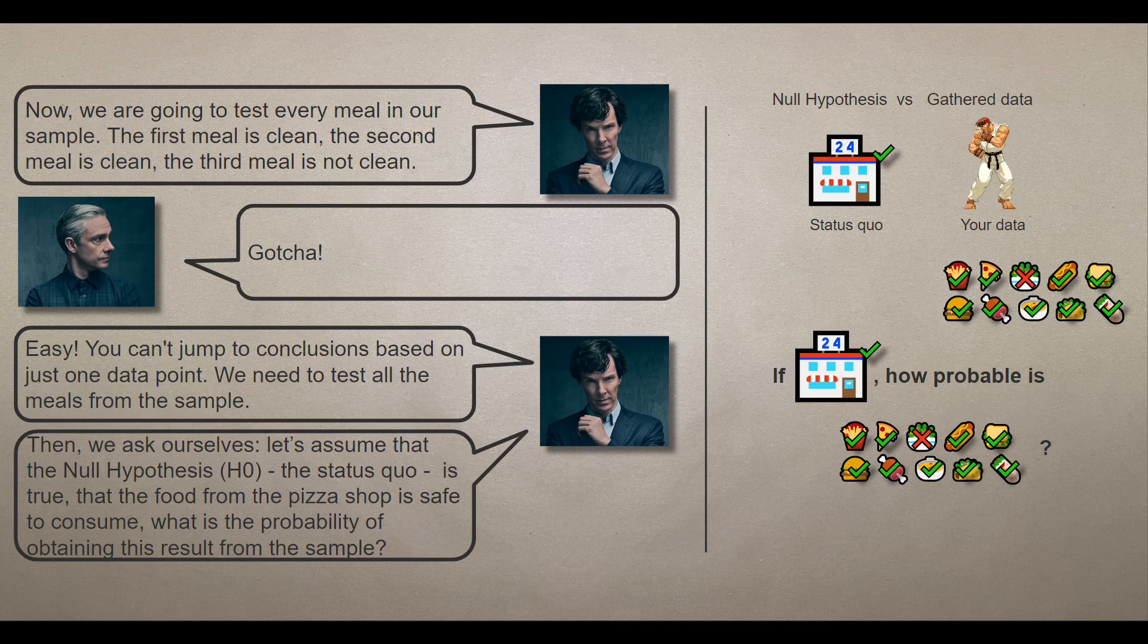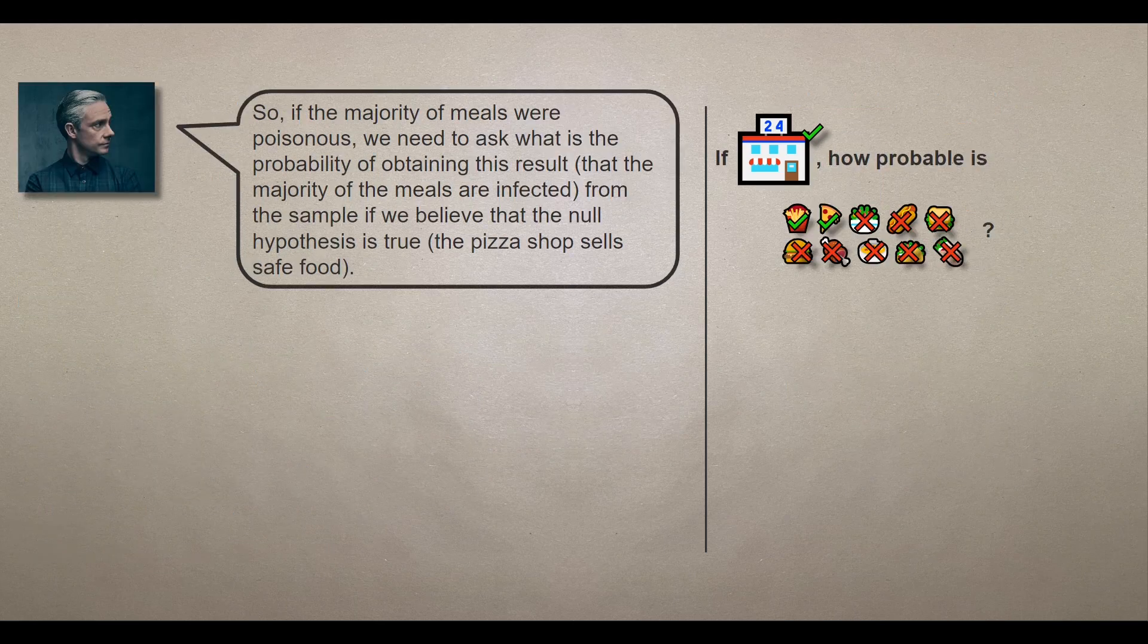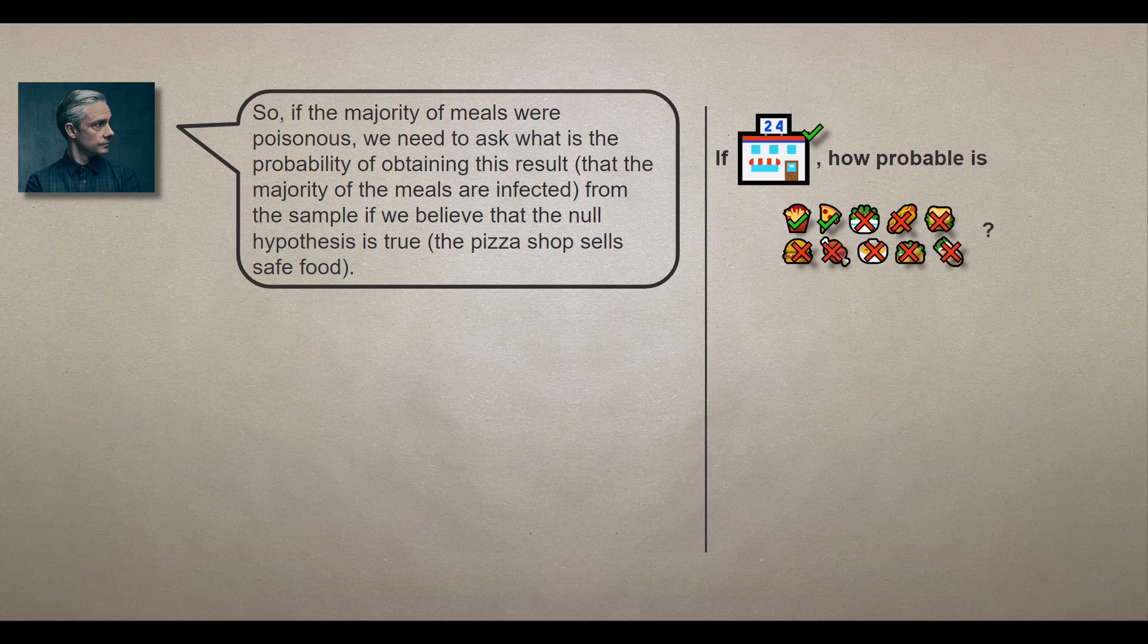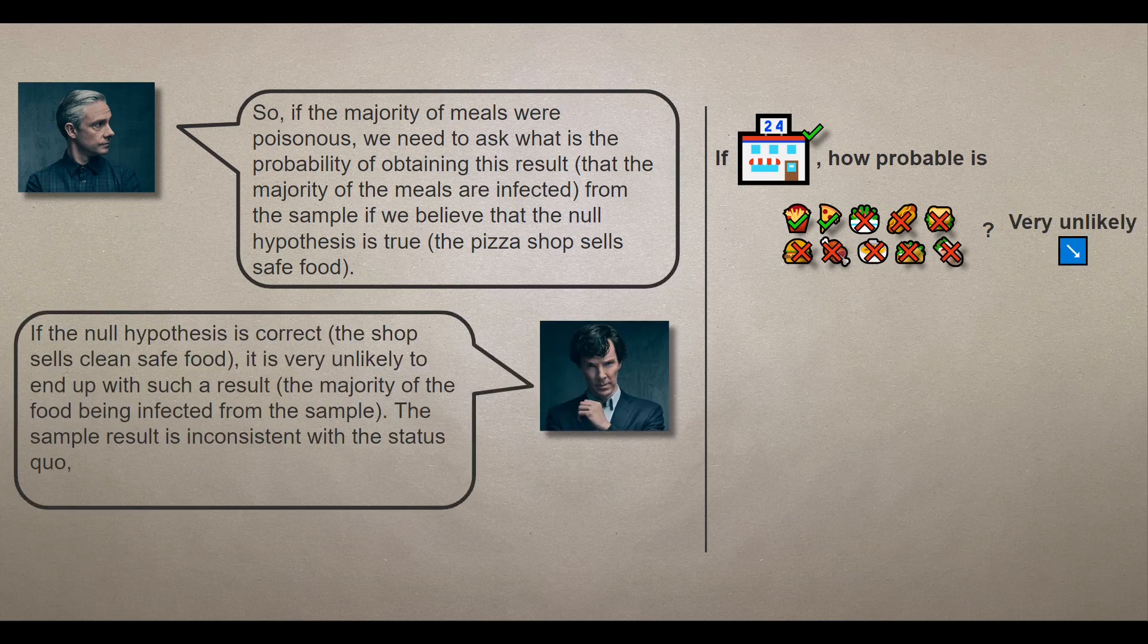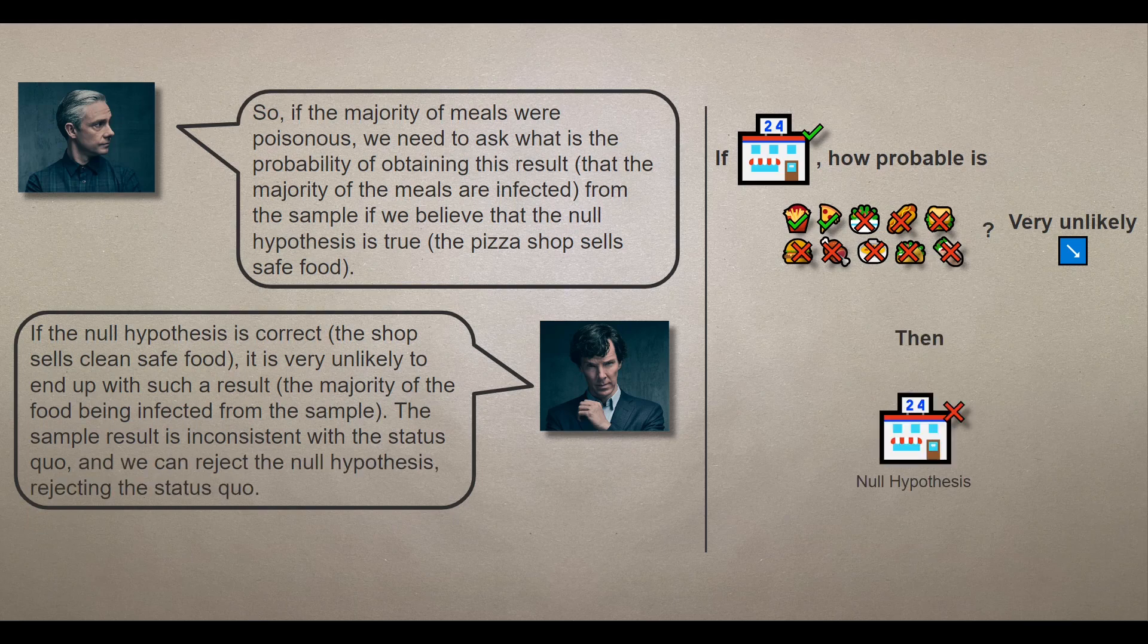Then we ask ourselves this question. Let's assume that the null hypothesis, the status quo, is true. Meaning that the food from the pizza shop is safe to consume. What is the probability of obtaining this result from the sample? So if the majority of the meals were poisonous, we need to ask what is the probability of obtaining such results, that the majority of the meals are infected from the sample, if we believe that the null hypothesis is true, that the pizza shop sells safe food. If the null hypothesis is correct, that the shop sells clean food, it's very unlikely to end up with such results, like the majority of the sample is infected. The sample result is inconsistent with the status quo. And we can reject the null hypothesis, rejecting the status quo.